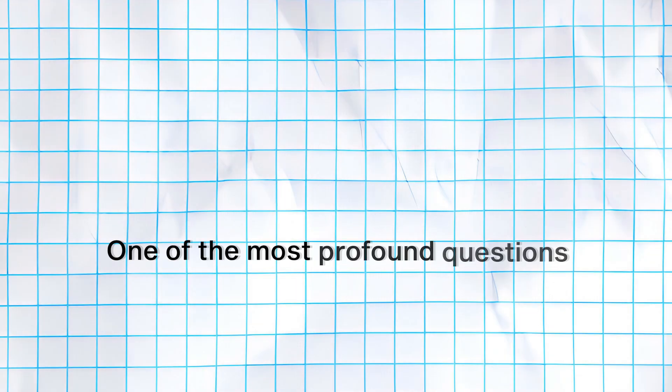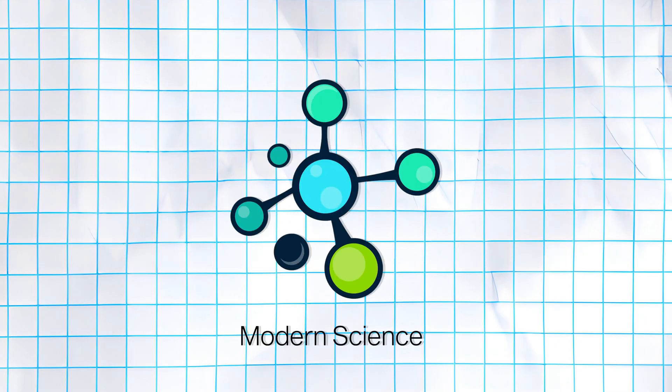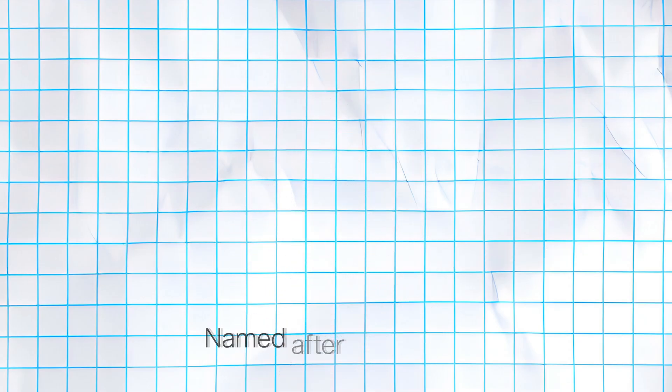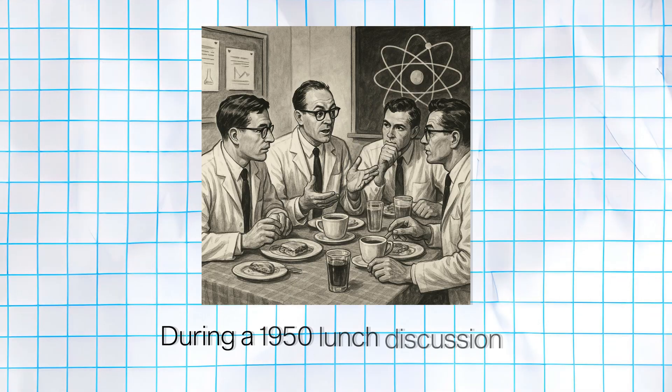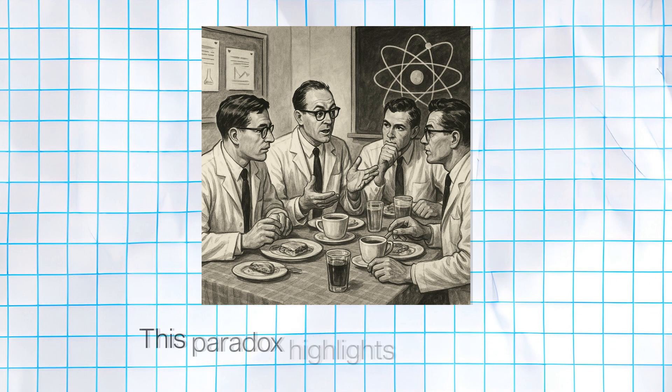The Fermi Paradox stands as one of the most profound questions in modern science, named after physicist Enrico Fermi, who famously asked, where is everybody? During a 1950 lunch discussion, this paradox highlights a troubling contradiction in our understanding of the universe.